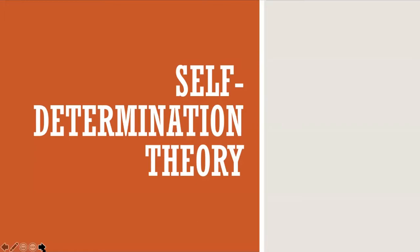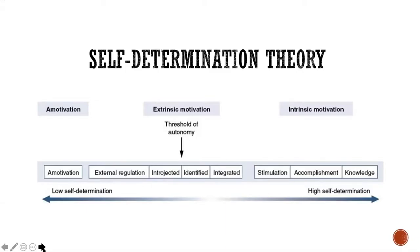That brings us to self-determination theory, which is a very important theory. There are a few sub-theories to self-determination theory, which can get a little bit complicated, but today we're going to go over two of the main ones. Self-determination doesn't mean determination in the way you might be used to — it doesn't quite mean being persistent. Rather, self-determination theory is talking about intrinsic motivation where the motivation comes from within you.